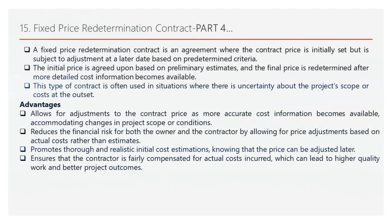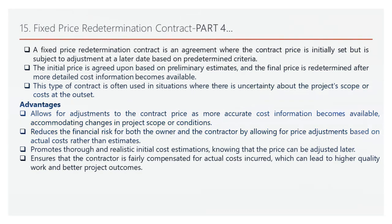Let's begin by understanding the fixed price redetermination contract, a type of agreement designed to provide flexibility in uncertain situations. The initial price is set based on preliminary estimates but is subject to adjustment at a later date based on predetermined criteria. The final price is redetermined after more detailed cost information becomes available. This contract type is often used where there's uncertainty about the project's scope or costs at the outset, allowing both parties to start without waiting for exact cost details.